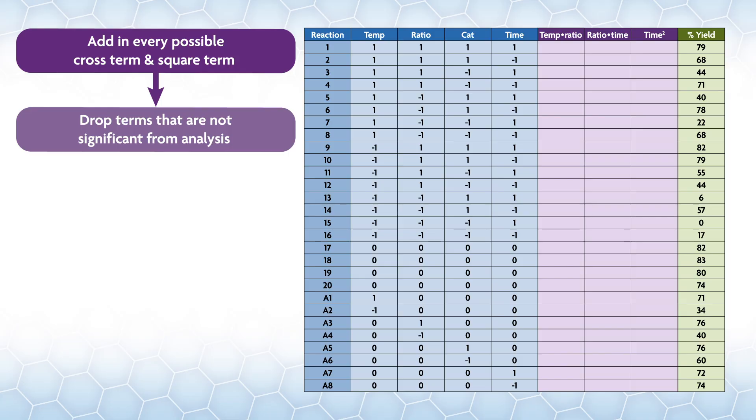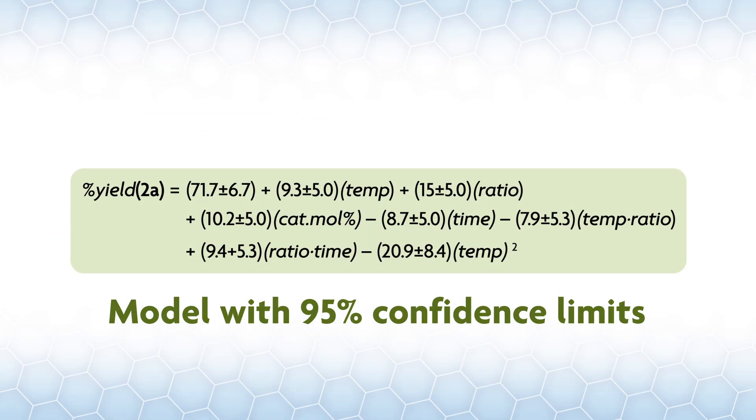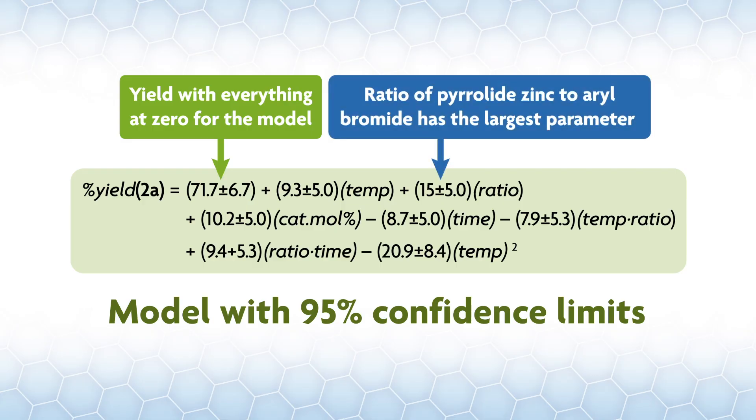To get the entries in the matrix, you literally just multiply or square the primary terms. So if your temp on a run is plus 1 and your ratio is minus 1, then temp times ratio equals plus 1 times minus 1 equals minus 1. So the numbers in the time squared column, we are literally just squaring the numbers under time. The matrix you run the regression on looks like this. Here's the model with 95% confidence limits on the parameters for this reaction. The first parameter, 72 plus or minus 7%, gives a yield with everything at zero for the model. The ratio of pyrolide zinc to aerobromide has the largest parameter, meaning it is important, and is positive, meaning more is better.